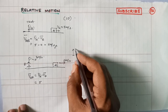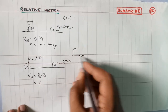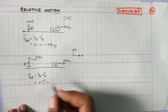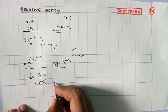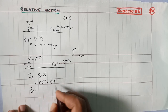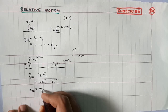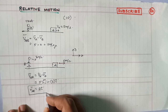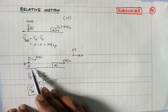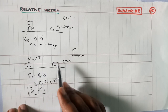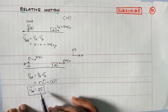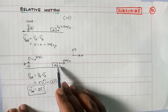This is the x-axis, this is the y-axis, this is the i-cap direction. Then VAB: VA is 5 i-cap, VB is 3 i-cap, so VA minus VB equals 5 minus 3 equals 2 i-cap. It is measured as 2 meters per second in this direction.